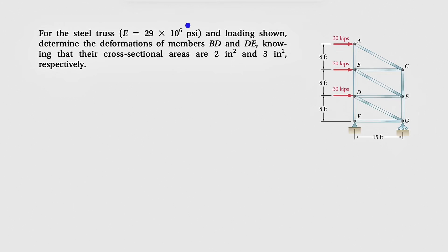Alright guys, welcome back. We're going to be solving another question from the second chapter of Mechanics of Materials by Beran Johnson. For this steel truss, we have the elastic modulus of 29 times 10 to the 6 PSI and loading that we can see.